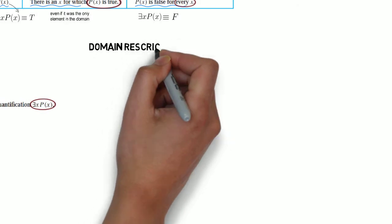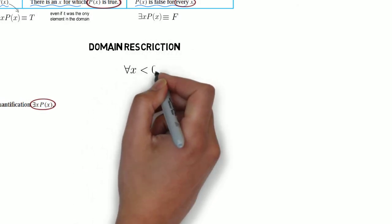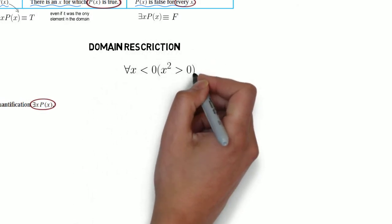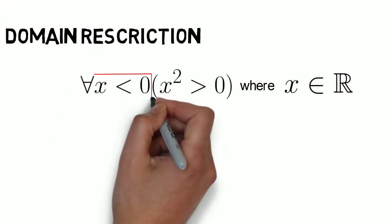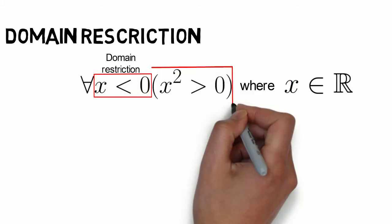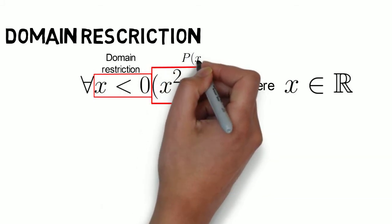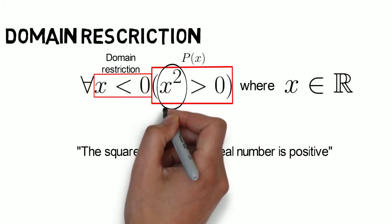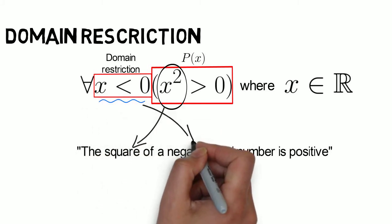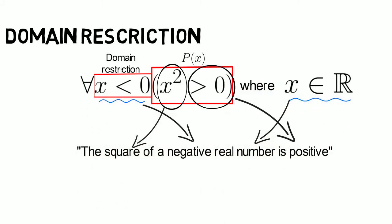Sometimes, we can specify the domain in the quantification statement. Like this. Here is the domain and here is P(x). The translation of this quantification statement in English would be: the square of a negative real number is positive.